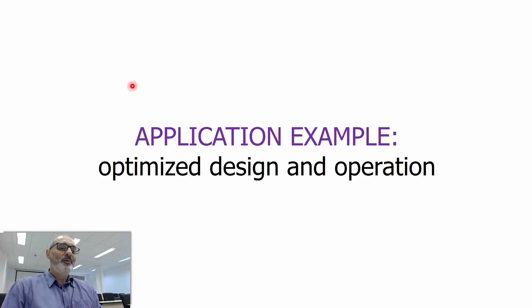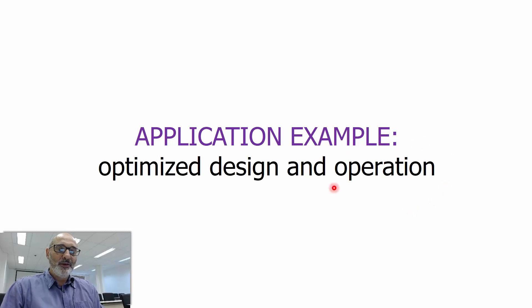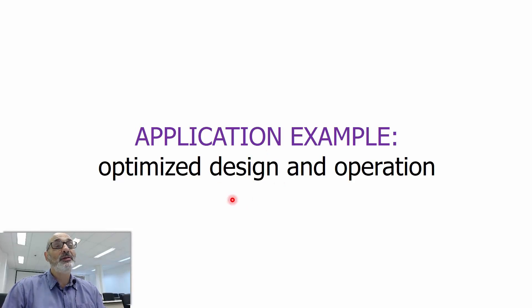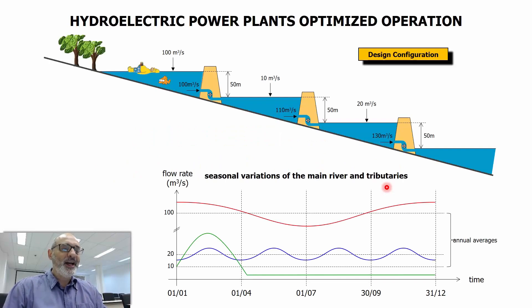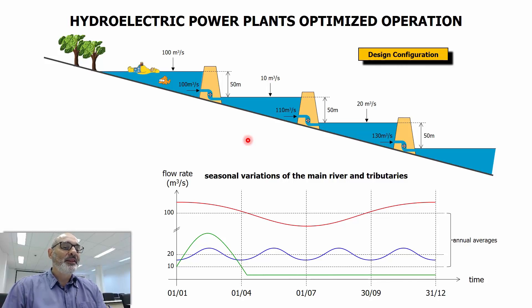An example of application: optimized design and operation. In order to explain how you can have an optimized operation, you must know, at least in rough lines, how a hydroelectric power plant is designed. So I need to talk a little bit about design in order to justify why the operation has to be that way. Let's define a synthetic problem just to exemplify.